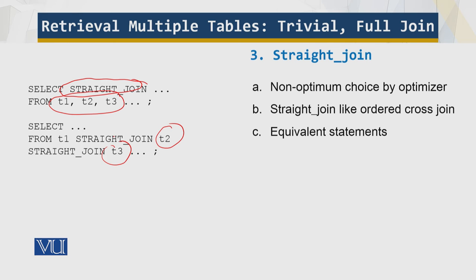Straight join can be specified at two points in a select statement. You can specify it between the select keyword and the selection list to have a global effect on all cross joins to the statement, or you can specify in the from clause. The following two statements are equivalent. This and this, they are equivalent, they are the same. I believe everybody understands this.